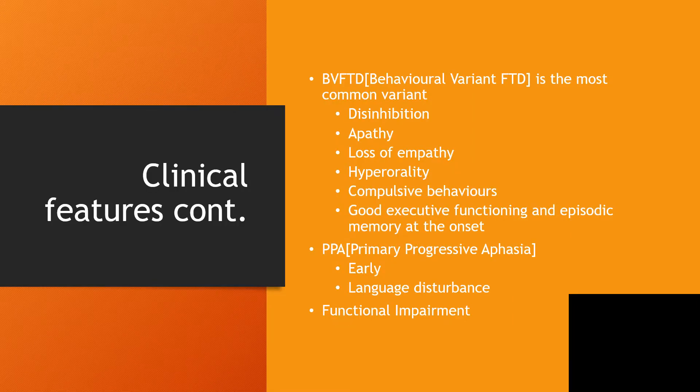The behavioral variant of frontotemporal dementia is the most common variant. With that, you are going to have disinhibition, apathy, loss of empathy, and orality — which means they are going to put things that are not expected to be put in the mouth into the mouth, just picking anything and putting it in the mouth. There are also compulsive behaviors, but surprisingly they may still have relatively good executive function while having episodic memory issues at onset. With primary progressive aphasia, there is early and notable language impairment and possible functional impairment.